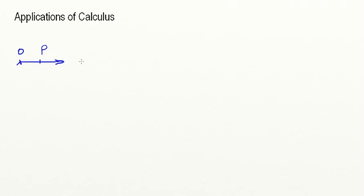Let's first discuss motion in a single line. Let's assume this is my origin, and I'm going to the right, and this is my final position. x is positive to the right. Now let's say that I start counting time as soon as I've started this motion. So I could argue that the position given by s is a function of time. So when I start my motion here at the origin, my time would be zero, and then I would reach a point p at another time. So I can simply say that my displacement is a function of time, and time is equal to zero or positive.